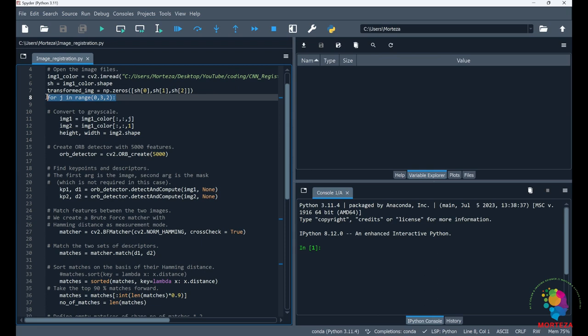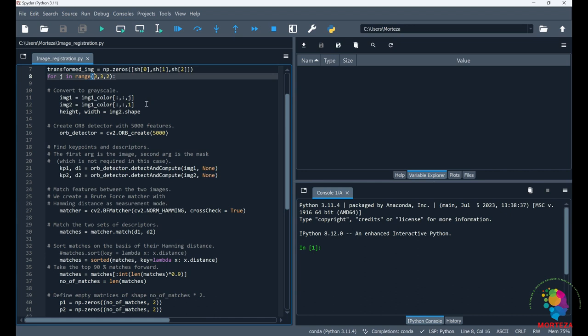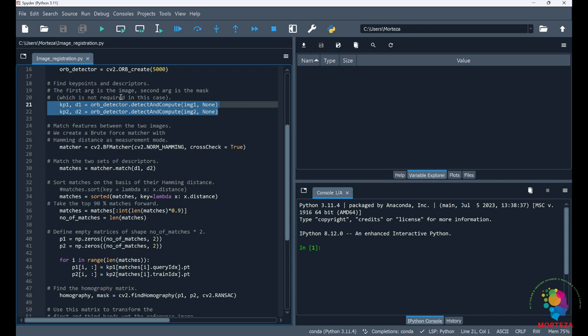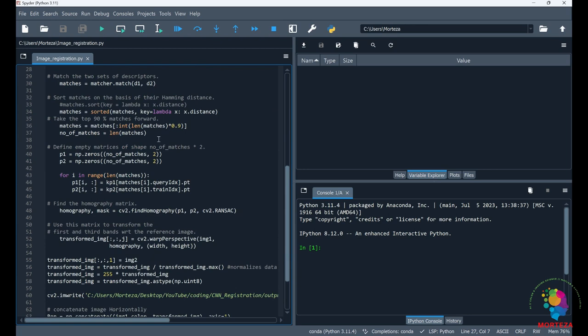And then I go through these for loops for two channels, the first and the third channel. You would go through the channels. The reference is going to be the second channel, which is one in Python. And then this is where I specify the number of features that I'm going to extract. This is where the features are extracted, the keypoints and their descriptors, and here is where they are matched. And then I only get 90% of the matches.